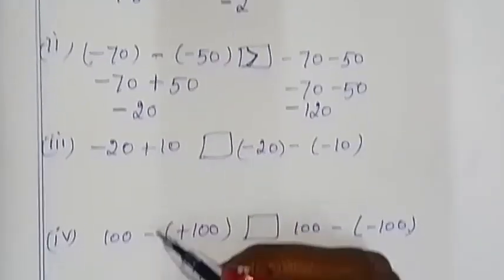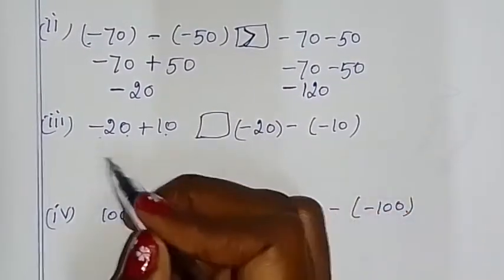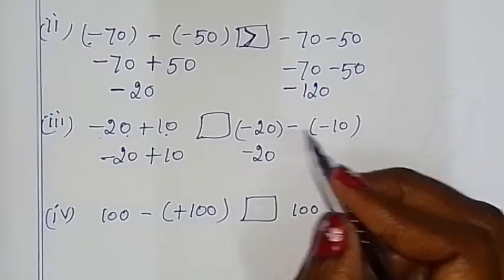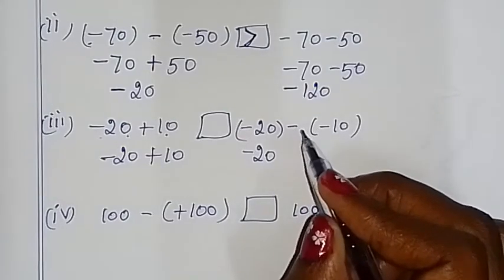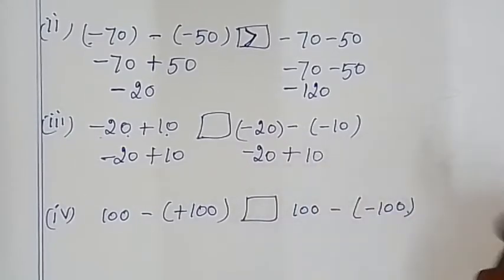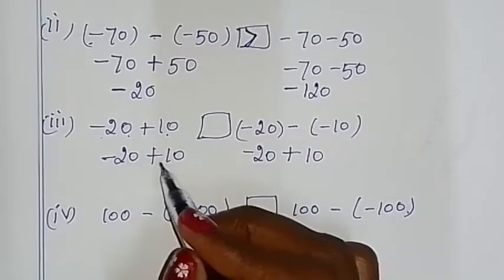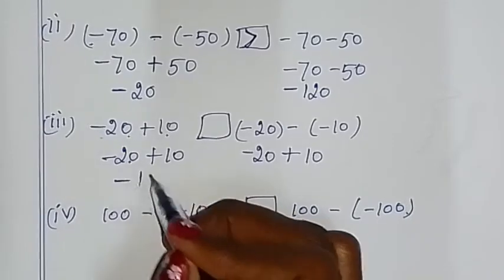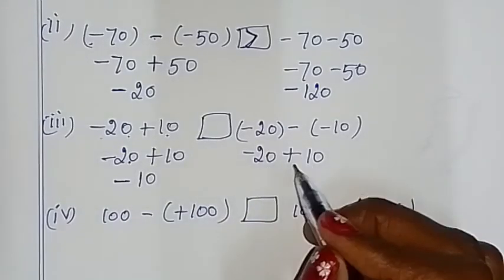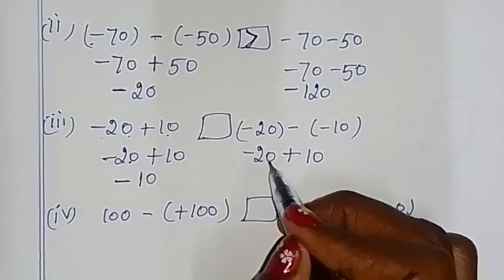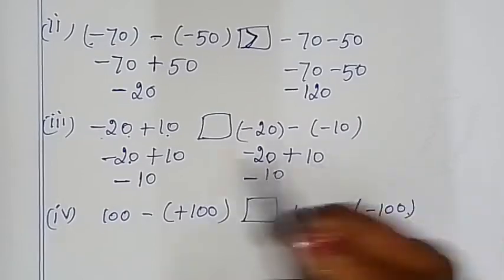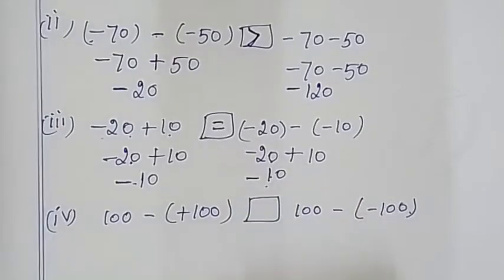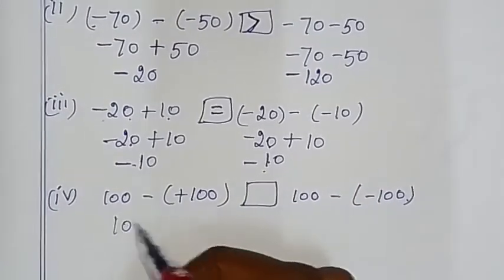Minus 20 plus 10. Here are two symbols — integer multiplication rules: 2 minuses = plus, so plus 10. Now two different symbols — subtract from the greater number: 20 minus 10 = 10, symbol is minus. Here also two symbols — subtract: 20 minus 10 = 10, symbol minus. So minus 10 equals minus 10 — same symbol, equal.